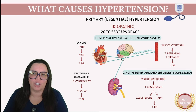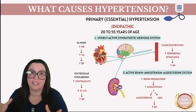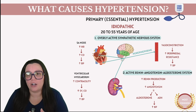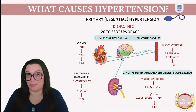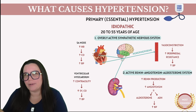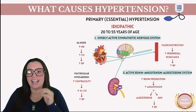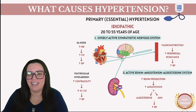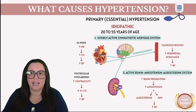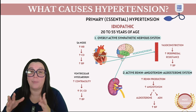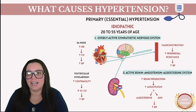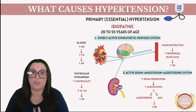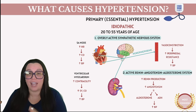Hypertension can come in different causes and be categorized differently. We have primary, also known as essential hypertension, and we have secondary hypertension. The exact cause of primary hypertension is not really clear — we call that idiopathic in medicine. This is the most common type, seen in upwards of 90% of cases, and typically occurs in individuals between 20 and 55 years of age. If we're looking at someone outside of that range, we're most likely thinking it's something else.